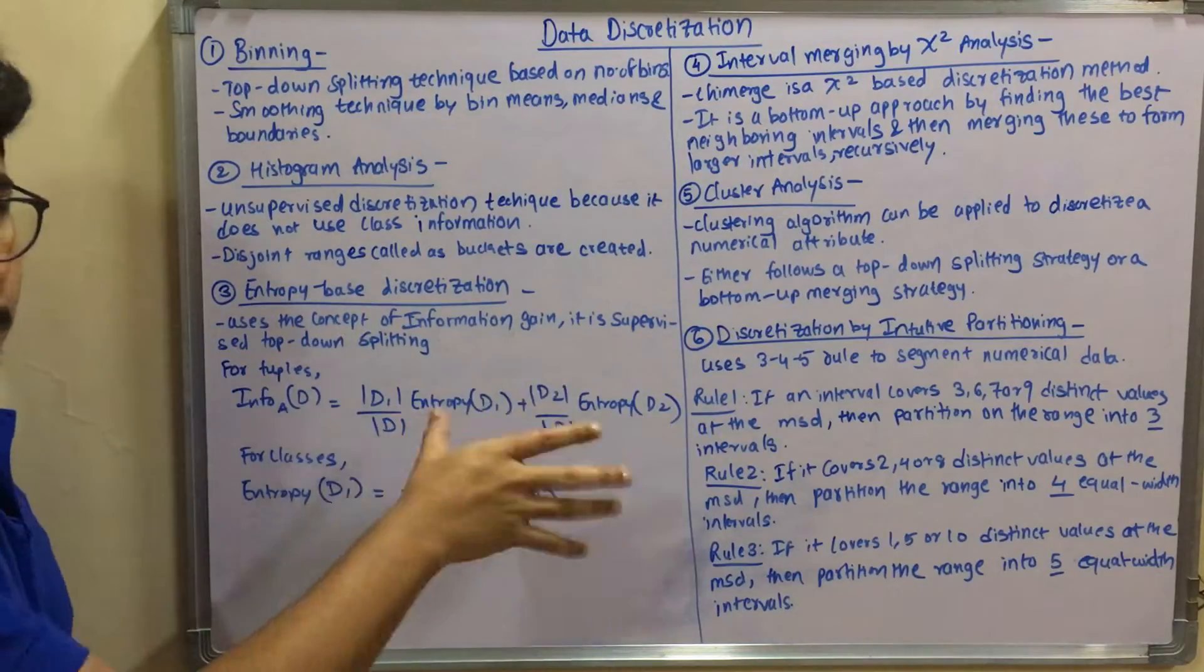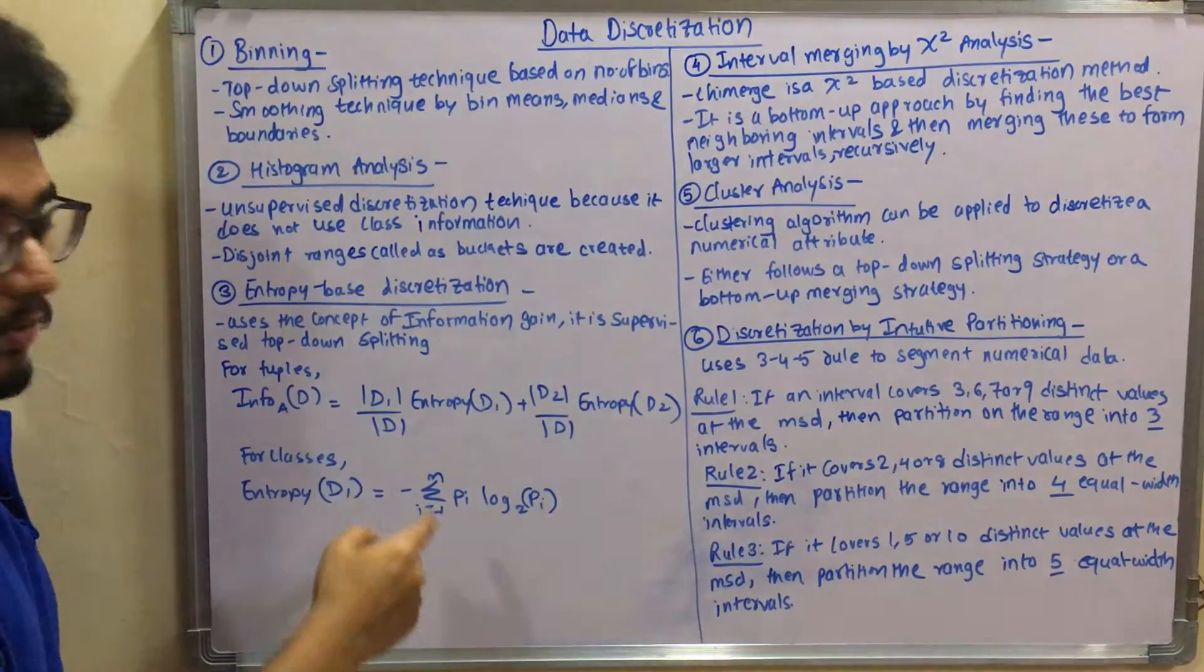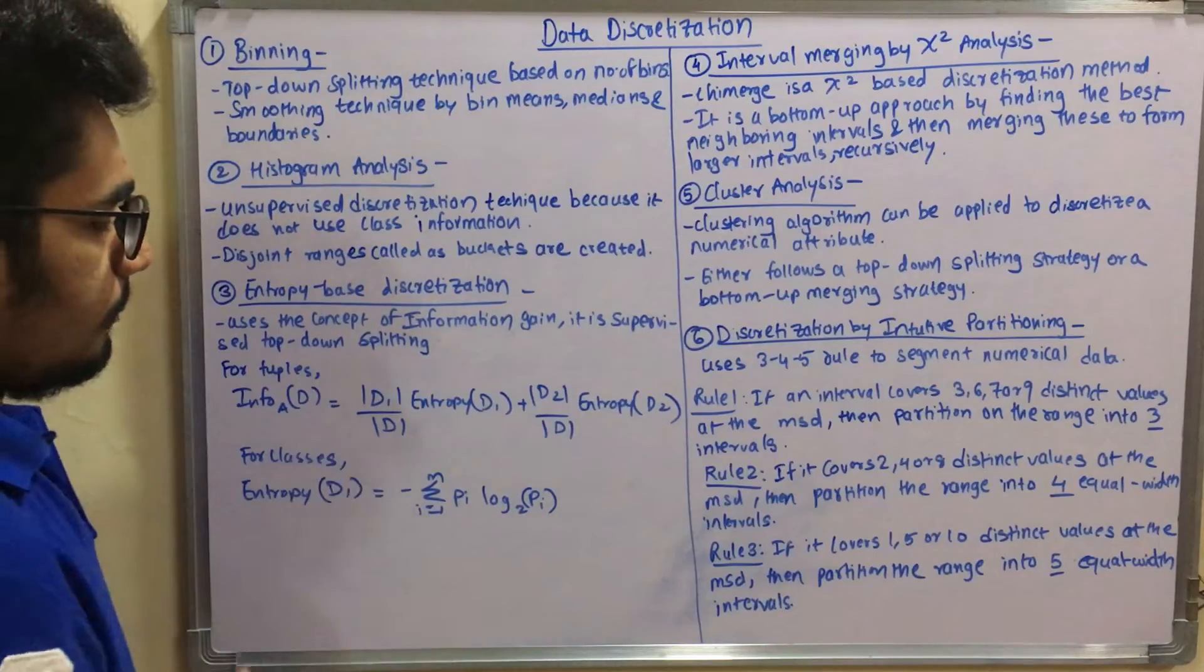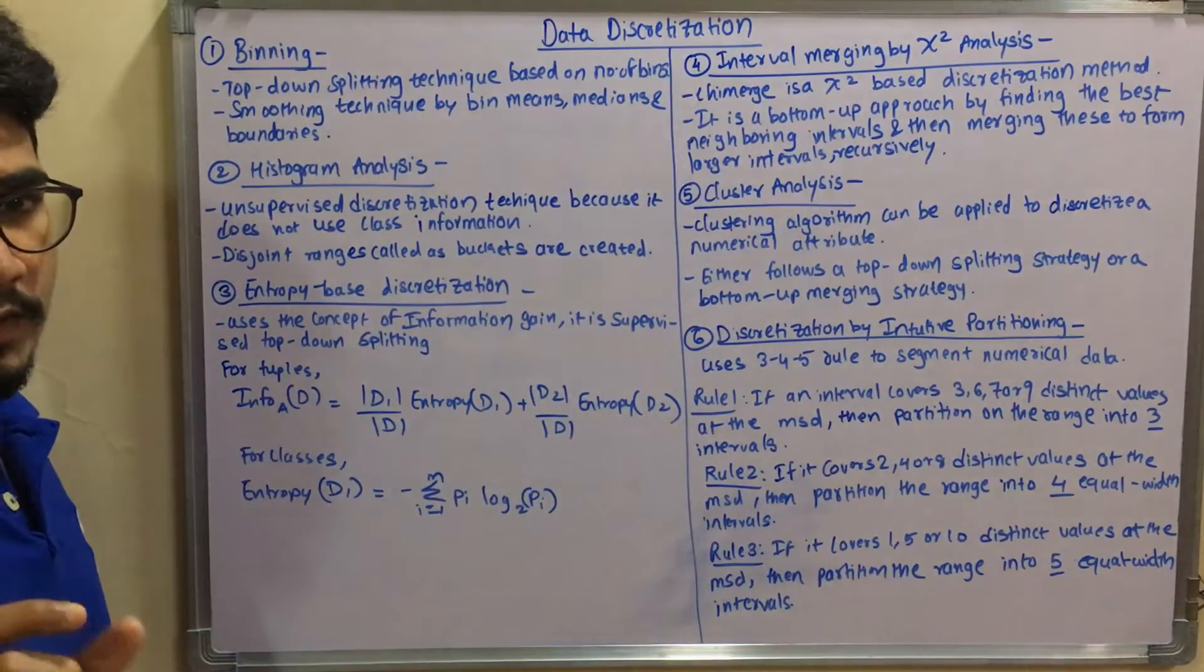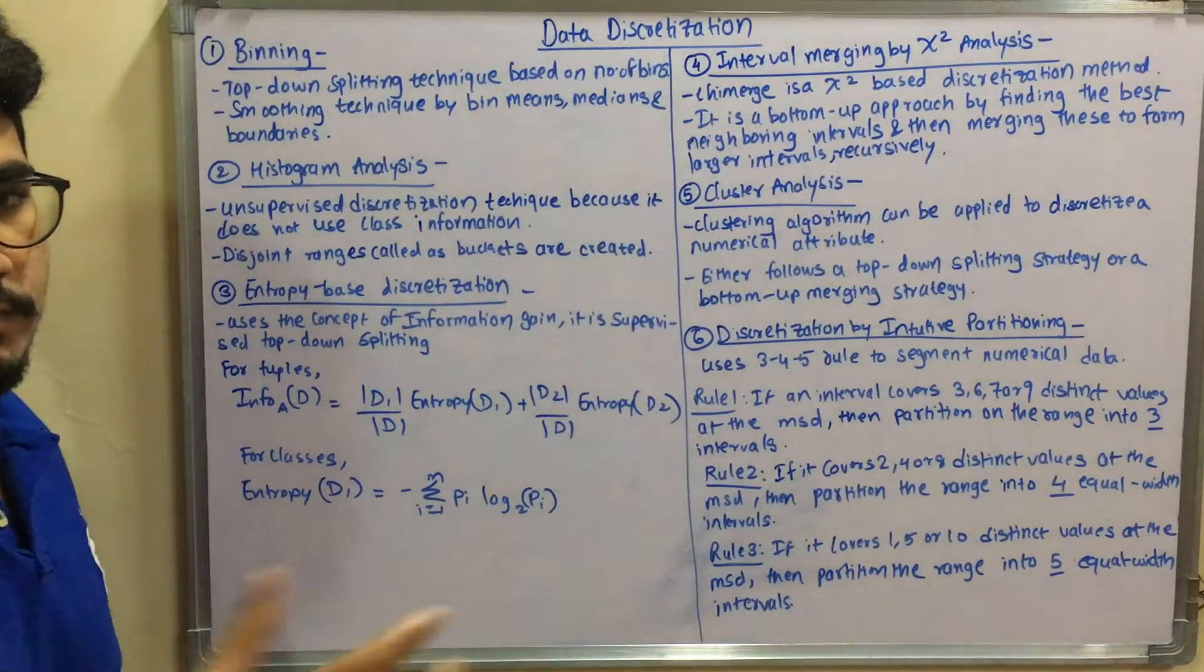And then for classes you have entropy of D1 which is equal to minus summation of i runs from 1 to m, pi log to the base 2 of pi. So pi is that particular class interval. I ranges from 1, 2, 3, 4 up till any particular integer, so it's basically the smallest integer in that particular class.